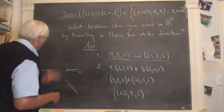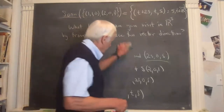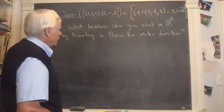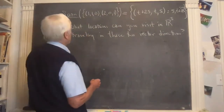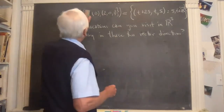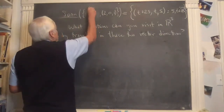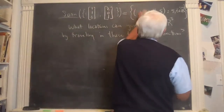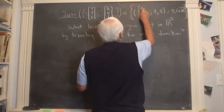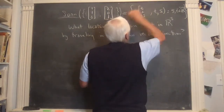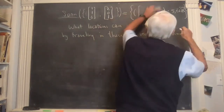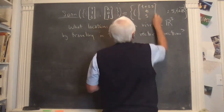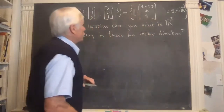Now let's look at the same question a little differently using the same vectors, just changing notation. I'll write them as column vectors: [1,1,0] and [2,0,1]. The answer from before — the span — is all points of the form t+2s, t, s — same answer, just with different notation.